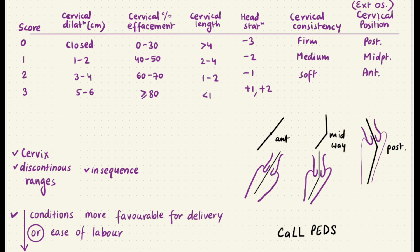What you have to imagine is the position of the external os with respect to the vaginal canal, because this is going to make up the birth canal together. When we say posterior, we mean the axis of the cervix is posteriorly placed relative to the axis of the vagina — that's a Bishop Score of zero. Midpoint gives a score of one, and anteriorly placed, in line with the vaginal canal, gives a score of two.